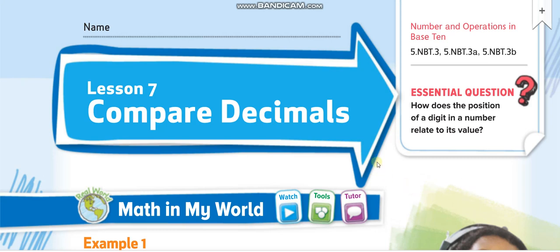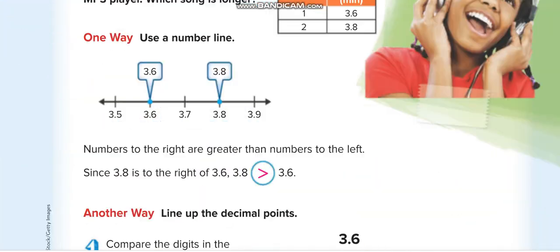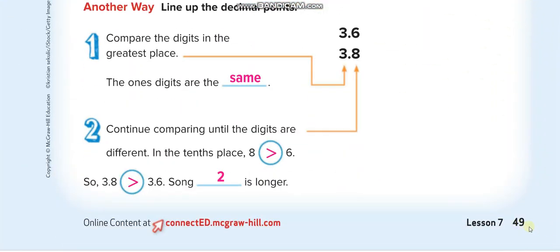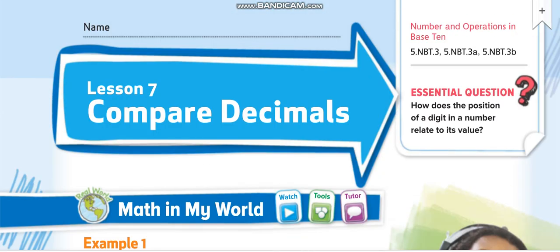Hello everyone, welcome back to another video lesson on my channel Learn Math with Mr. Saad. Today's lesson for Grade 5, Chapter 1, Lesson 7: Compare Decimals, page number is 49. Before starting today's lesson, don't forget to subscribe to my channel Learn Math with Mr. Saad and also press the bell icon to get notified for every new video.